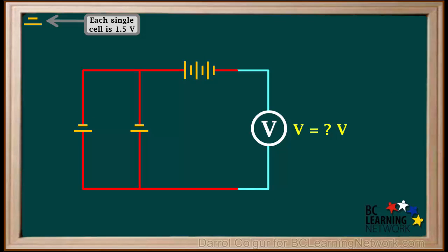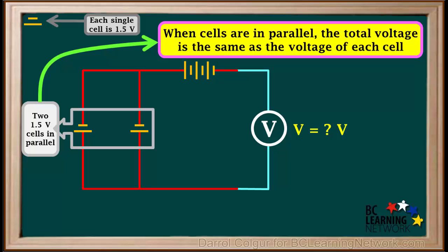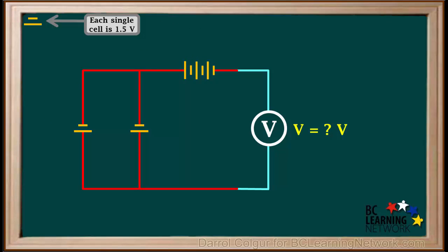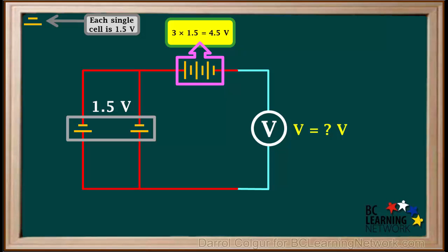Here's another example. We're given an arrangement of 1.5-volt cells and asked to determine the voltmeter reading. The two cells on the left are two 1.5-volt cells in parallel. For cells in parallel, the total voltage of the group equals the voltage of each cell, so this combination is equivalent to a single 1.5-volt cell. The group of cells on top consists of three 1.5-volt cells in series, so their total voltage is 3 times 1.5, which is 4.5 volts.